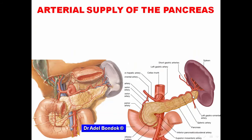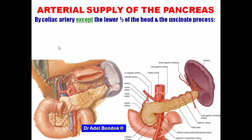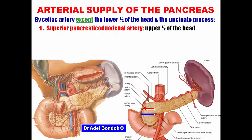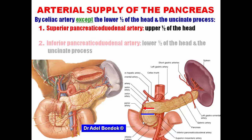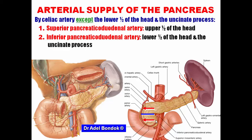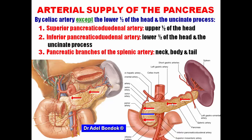The pancreas is supplied by the celiac artery, except the lower half of the head and the uncinate process, which are supplied by the superior mesenteric artery. The superior pancreatic-duodenal artery supplies the upper half of the head, and the inferior pancreatic-duodenal artery supplies the lower half of the head and the uncinate process, anastomosing at the biliary orifice. The neck, body, and tail are supplied by the pancreatic branches of the splenic artery.